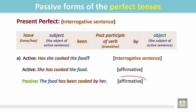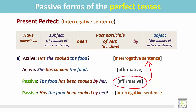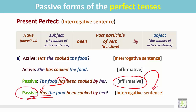Now change this affirmative into an interrogative sentence. In the interrogative sentence, place the auxiliary verb — the verb 'to have' — at the beginning of the sentence. And the sentence has been changed into an interrogative sentence in the passive form.